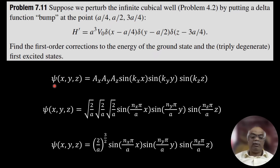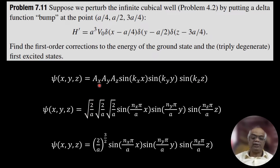From problem 4.2, the cubical well wave function is ψ(x,y,z) = Ax Ay Az sin(kx·x) sin(ky·y) sin(kz·z), where the normalization constant is √(2/a) in each direction, giving (2/a)^(3/2) overall. Here kx = nxπ/a, ky = nyπ/a, kz = nzπ/a. Multiplying all three normalization factors together gives (2/a)³ with the sine terms.